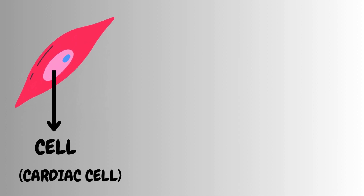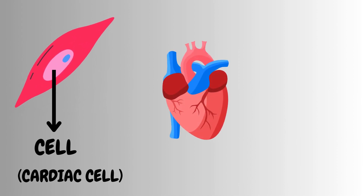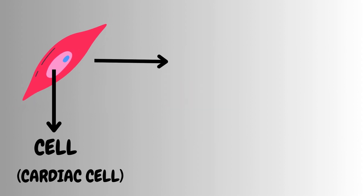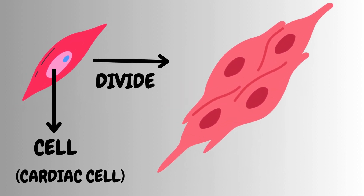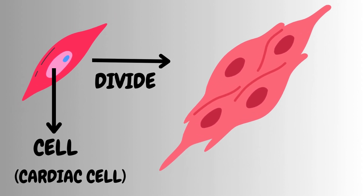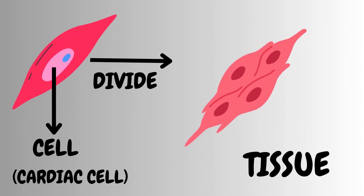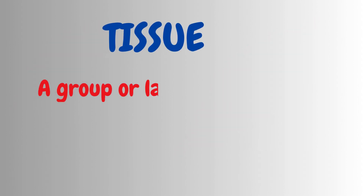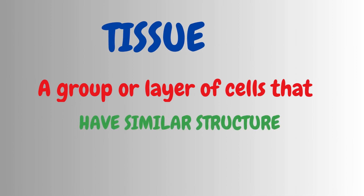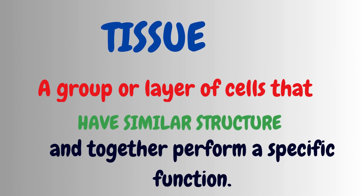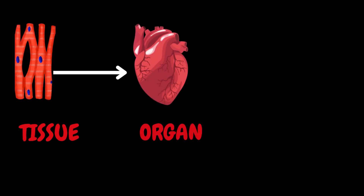So let's take one cell from any particular part of our body. Here I am taking a cardiac cell, jis se heart ki formation hoti hai. As all cells divide and multiply, so ye single cell bhi divide hoga and it will form multiple cells of the same kind. And this is how ek single cell group of cells banayega, that will be called as a tissue. And all the cells of a particular tissue will have a similar structure and they will perform the same function.